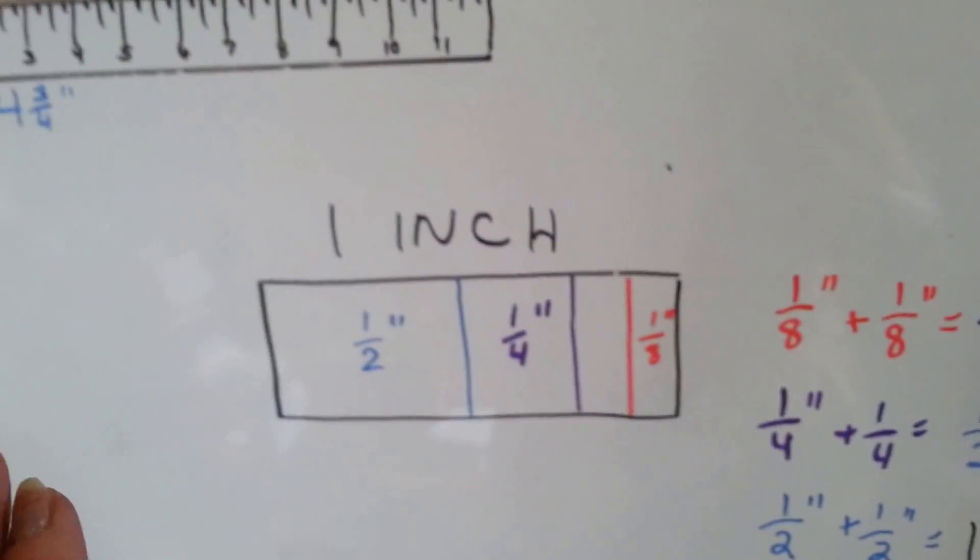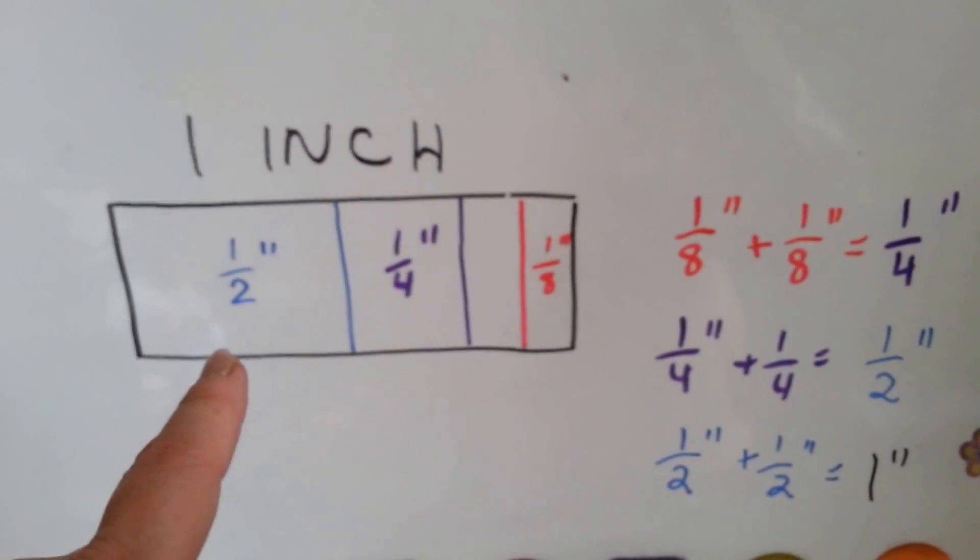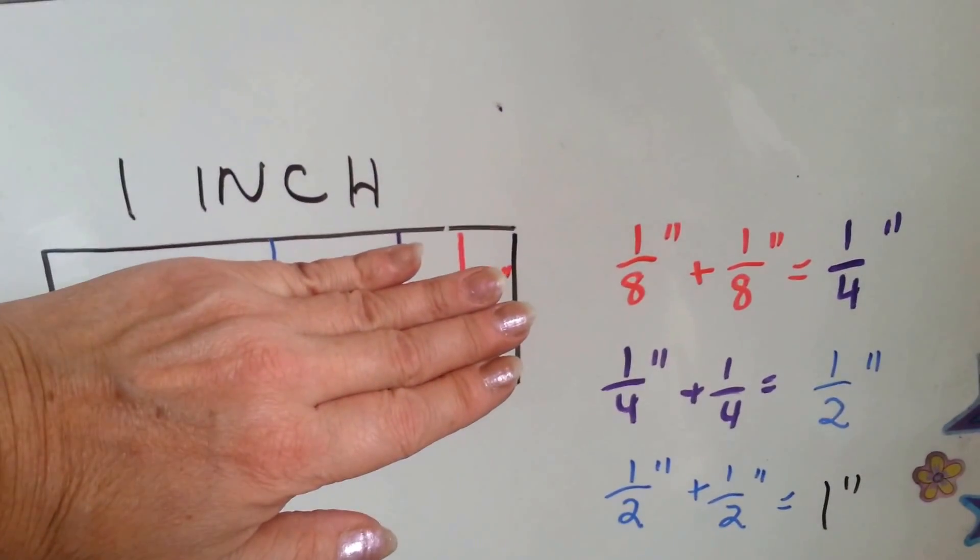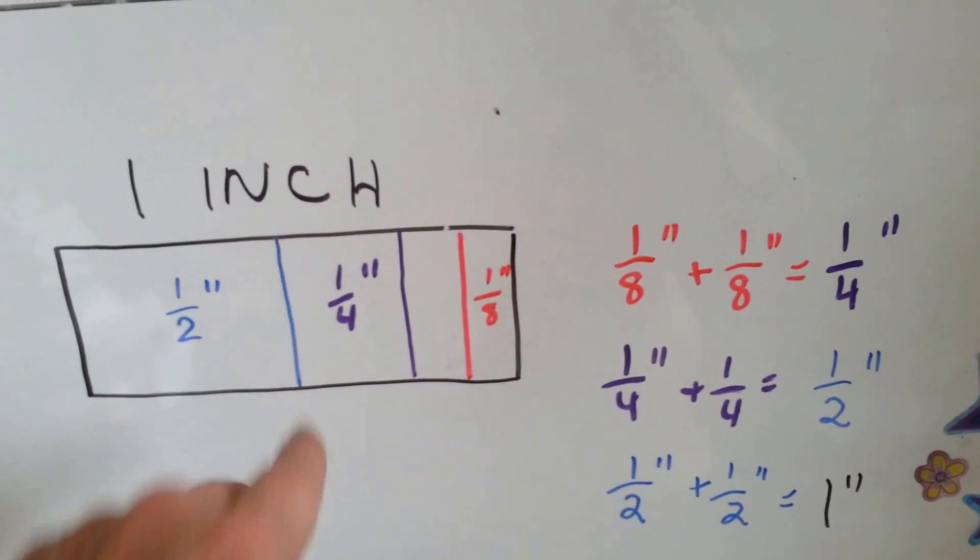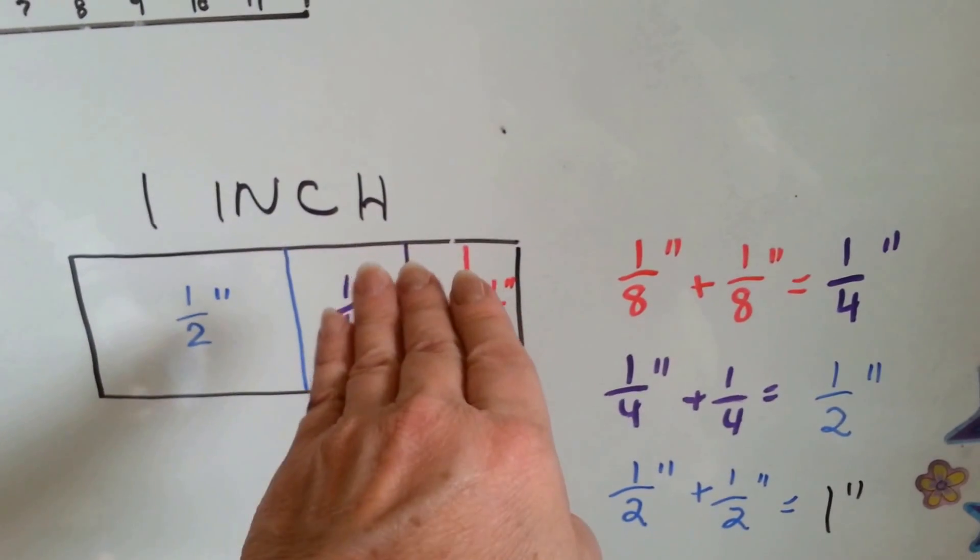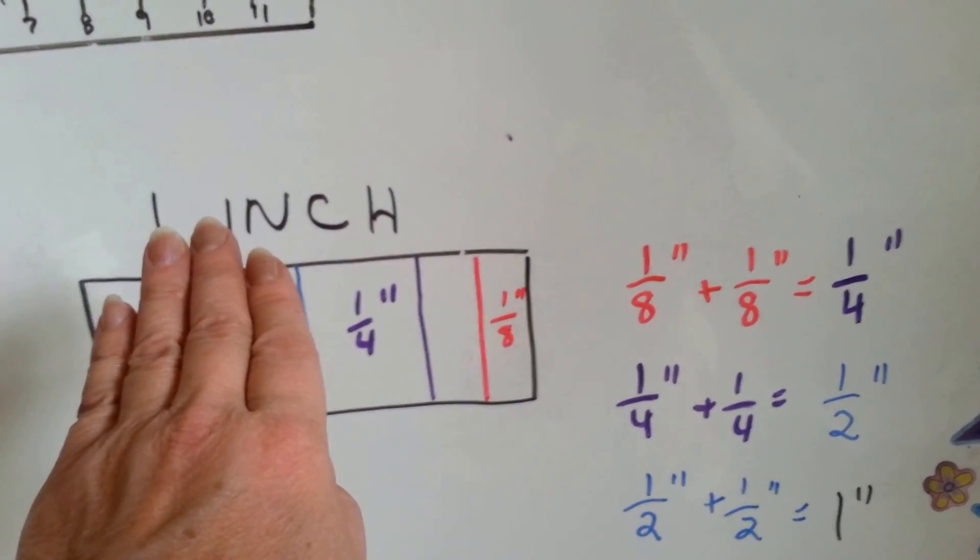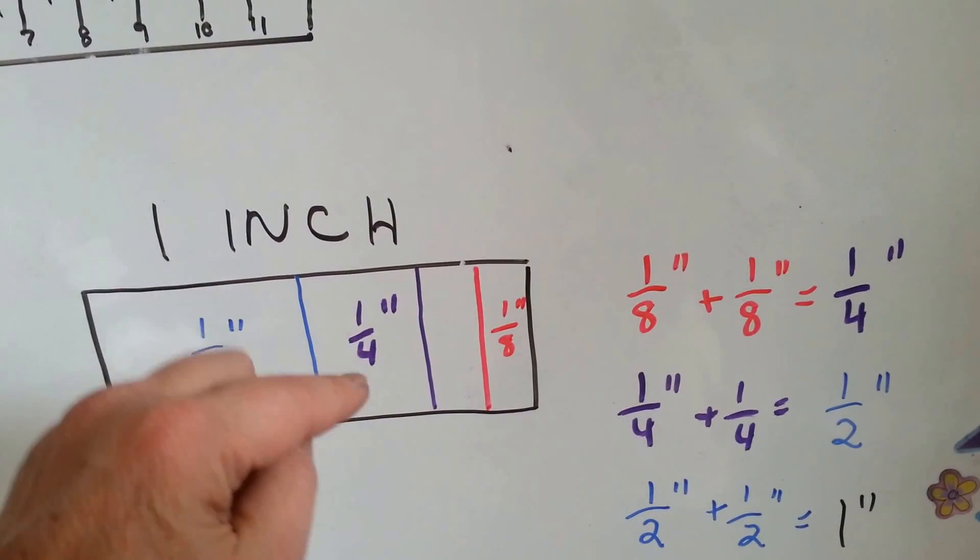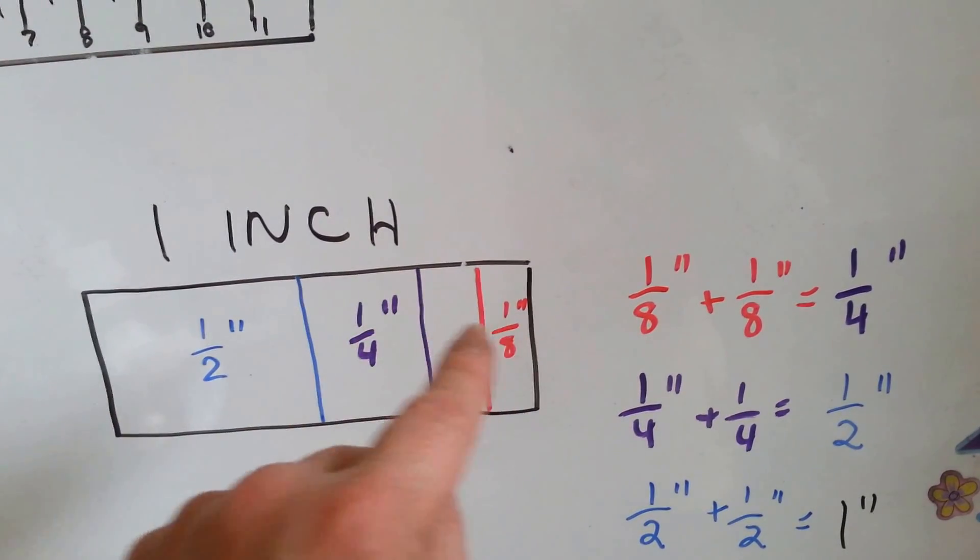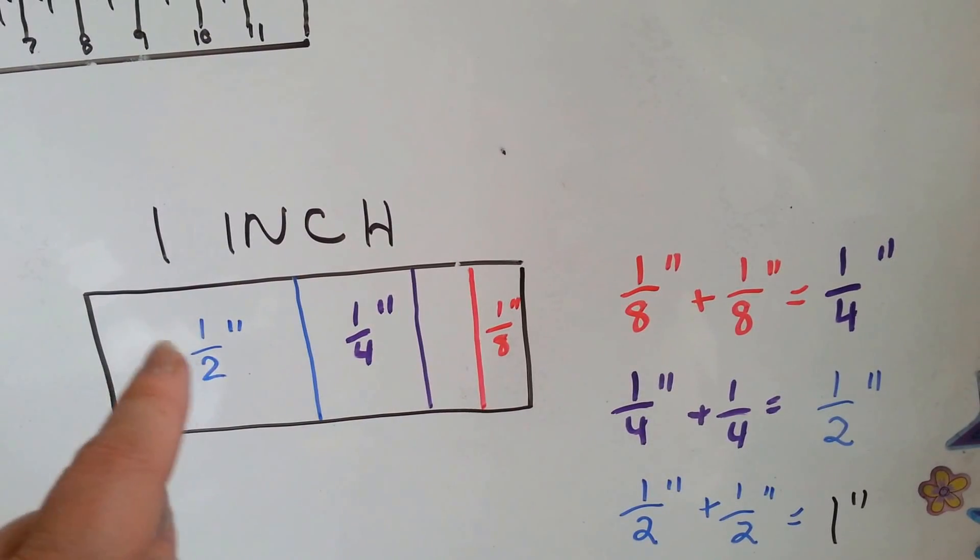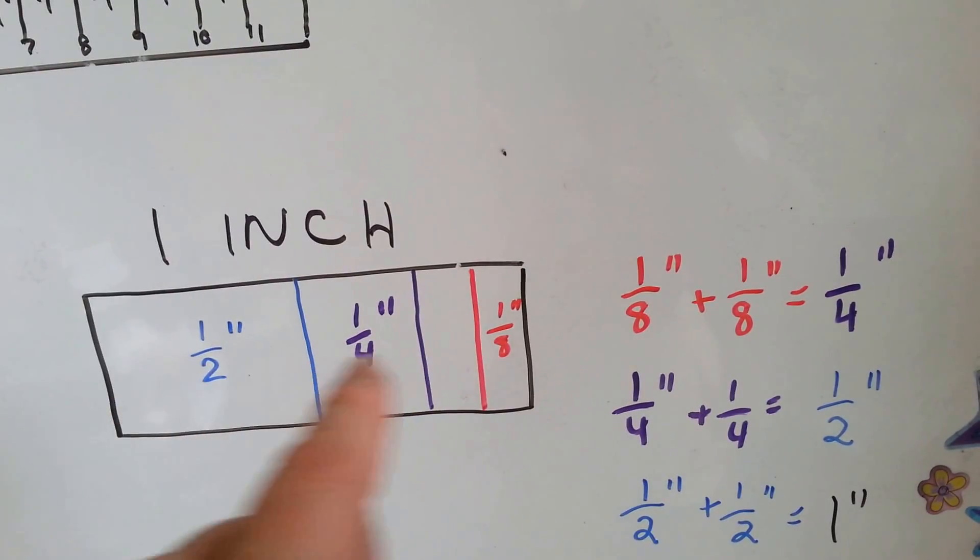So remember, in an inch, if this whole thing was an inch, you split it in half and you got a half inch and a half inch. You got two halves. If you split one of the halves in half, you'd have a fourth. You could put two fourths in here. You could put one, two, three, four fourths in the whole inch.